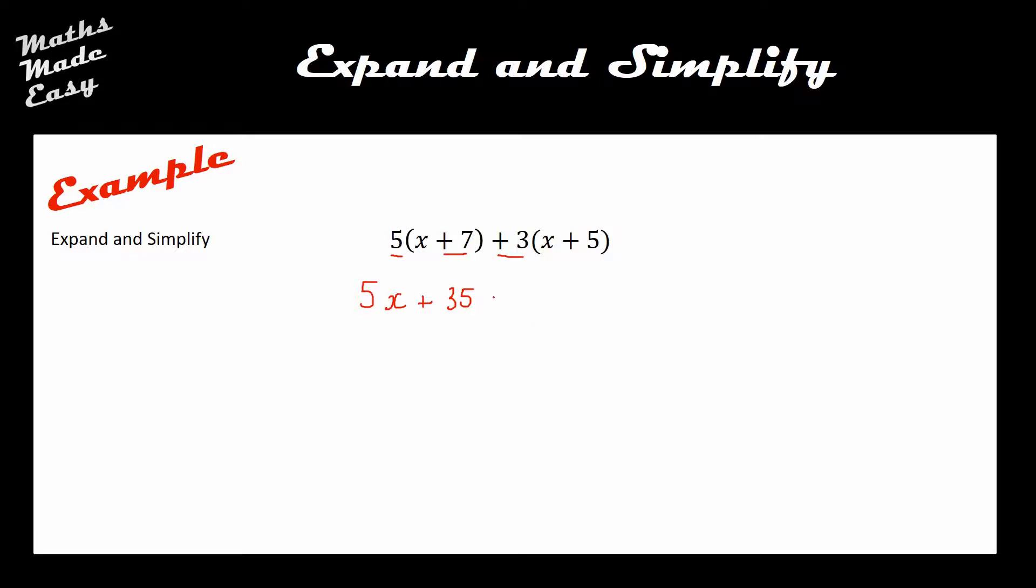If you remember from the previous video, signs are really important when we're doing this. Here I've got a positive 3 being multiplied by a positive x giving me positive 3x, and the positive 3 is multiplied by a positive 5 to give me positive 15. My 5x and 3x combine to make 8x, and my plus 35 and plus 15 combine to make plus 50.